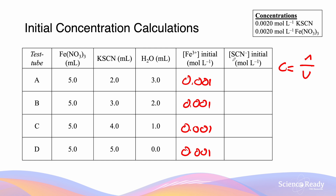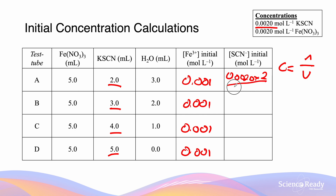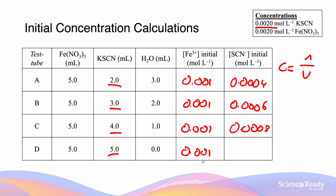We then do the same for the thiocyanate. However, in this case the thiocyanate volume is changing — 2, 3, 4, and 5 mL across solutions A through D. So for solution A, it would be 0.0020 × 2 mL ÷ 10 mL = 0.0004 mol/L. For 3 mL it will be 0.0006, for 4 mL it will be 0.0008, and since there is the same amount of thiocyanate and nitrate in the final solution, the concentration will also be 0.001 mol/L.